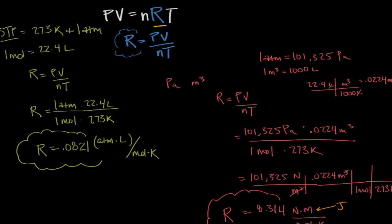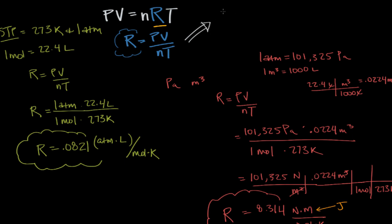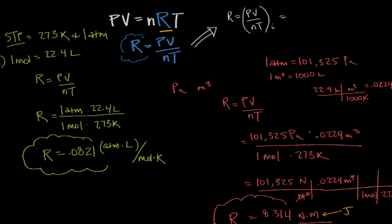So think about what this means. If R is constant, then R is equal to PV over nT for the initial state of a gas. But R is also equal to PV over nT for the final state of a gas. This is true because PV over nT always equals R for any ideal gas. And so what we're really saying here is that the initial PV over nT is equal to the final PV over nT, which opens up all sorts of neat predictive possibilities, say if we were to change one of the variables. We're going to explore these possibilities in the next few videos.